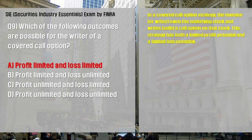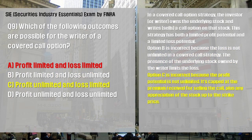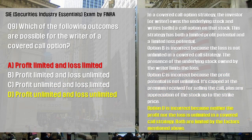In a covered call option strategy, the investor or writer owns the underlying stock and sells a call option on that stock. This strategy has both a limited profit potential and a limited loss potential. Option B is incorrect because the loss is not unlimited — the presence of the underlying stock limits the loss. Option C is incorrect because the profit potential is not unlimited; it is capped at the premium received for selling the call, plus any appreciation of the stock up to the strike price. Option D is incorrect because neither the profit nor the loss is unlimited in a covered call strategy.